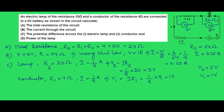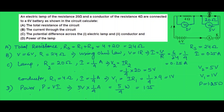Next, the power of the lamp. Power P = voltage × current. The voltage across the lamp is 5 volt and the current is 1/4 ampere, so P = 5 × (1/4) = 5/4 = 1.25 watt.